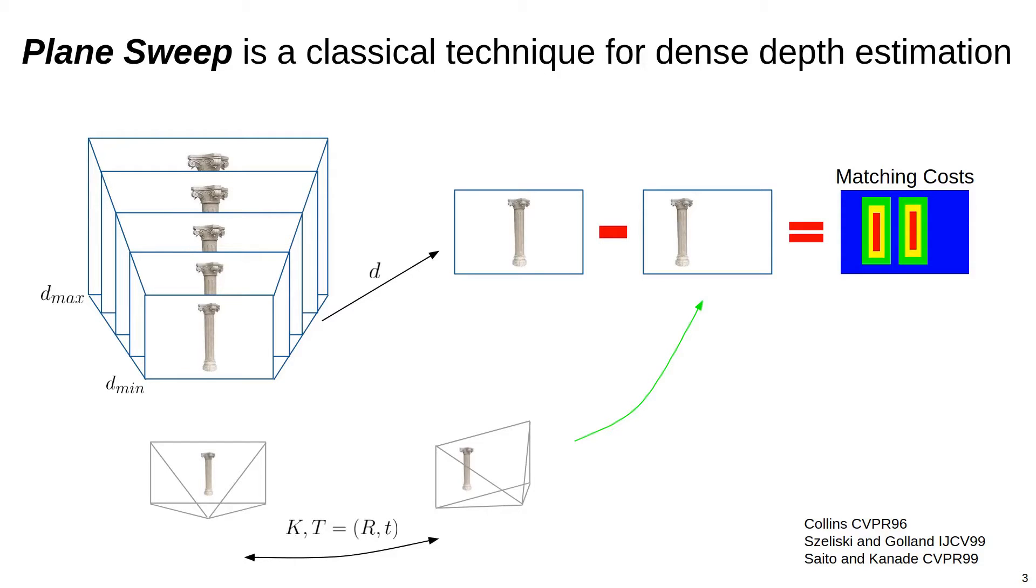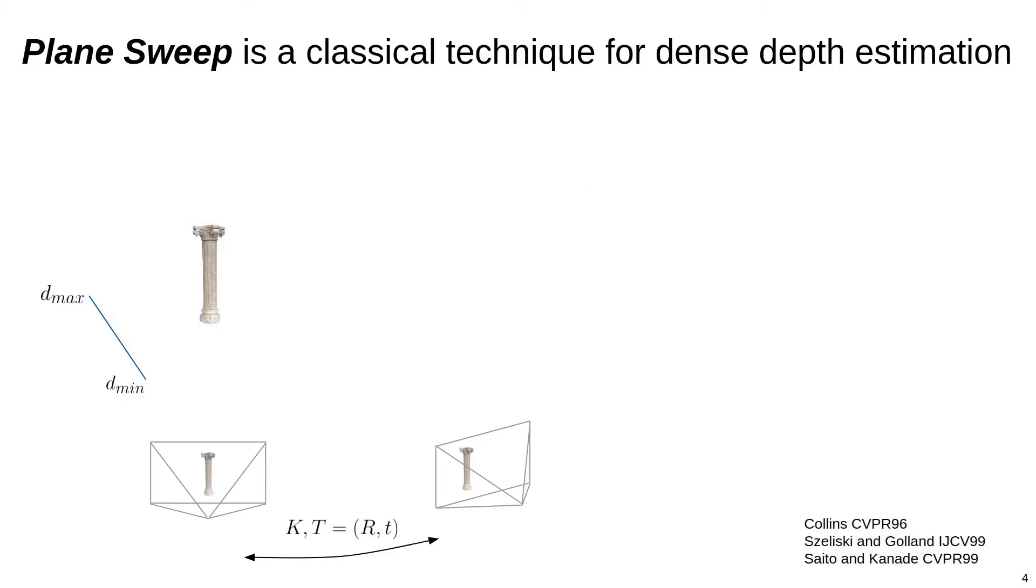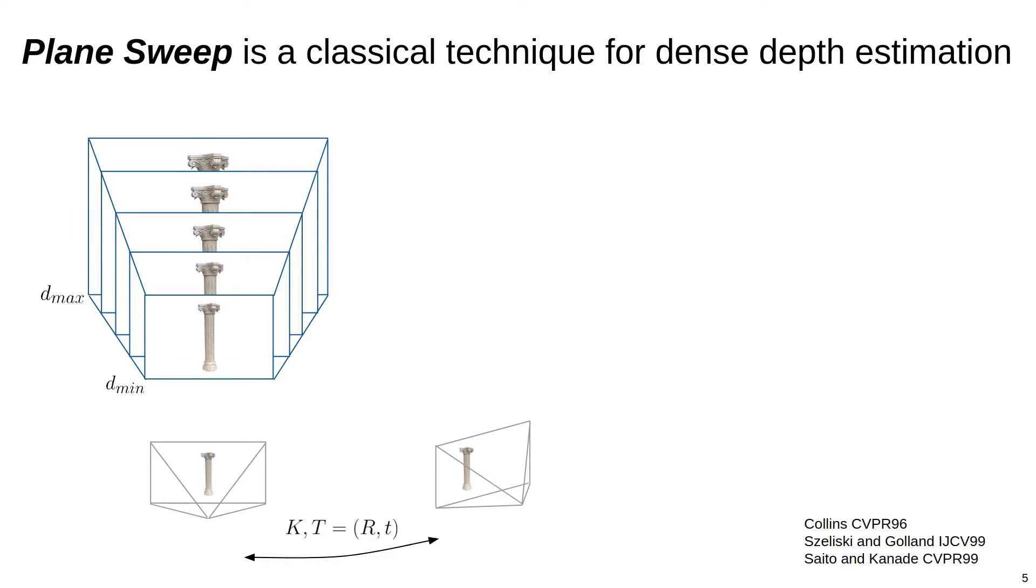Plane sweep is a classical technique for MVS that finds dense correspondences by reasoning over planes at different depths. Rather than finding correspondences for all individual pixels independently, plane sweep uses techniques from multiview geometry to find associations for all pixels in the reference image. First, a depth search range in a reference image is defined, and a set of depths in this range are sampled. When all the pixels in the reference image are considered, each depth sample induces a plane in 3D space. The set of all planes across all the depth samples defines a 3D volume in the reference frame.